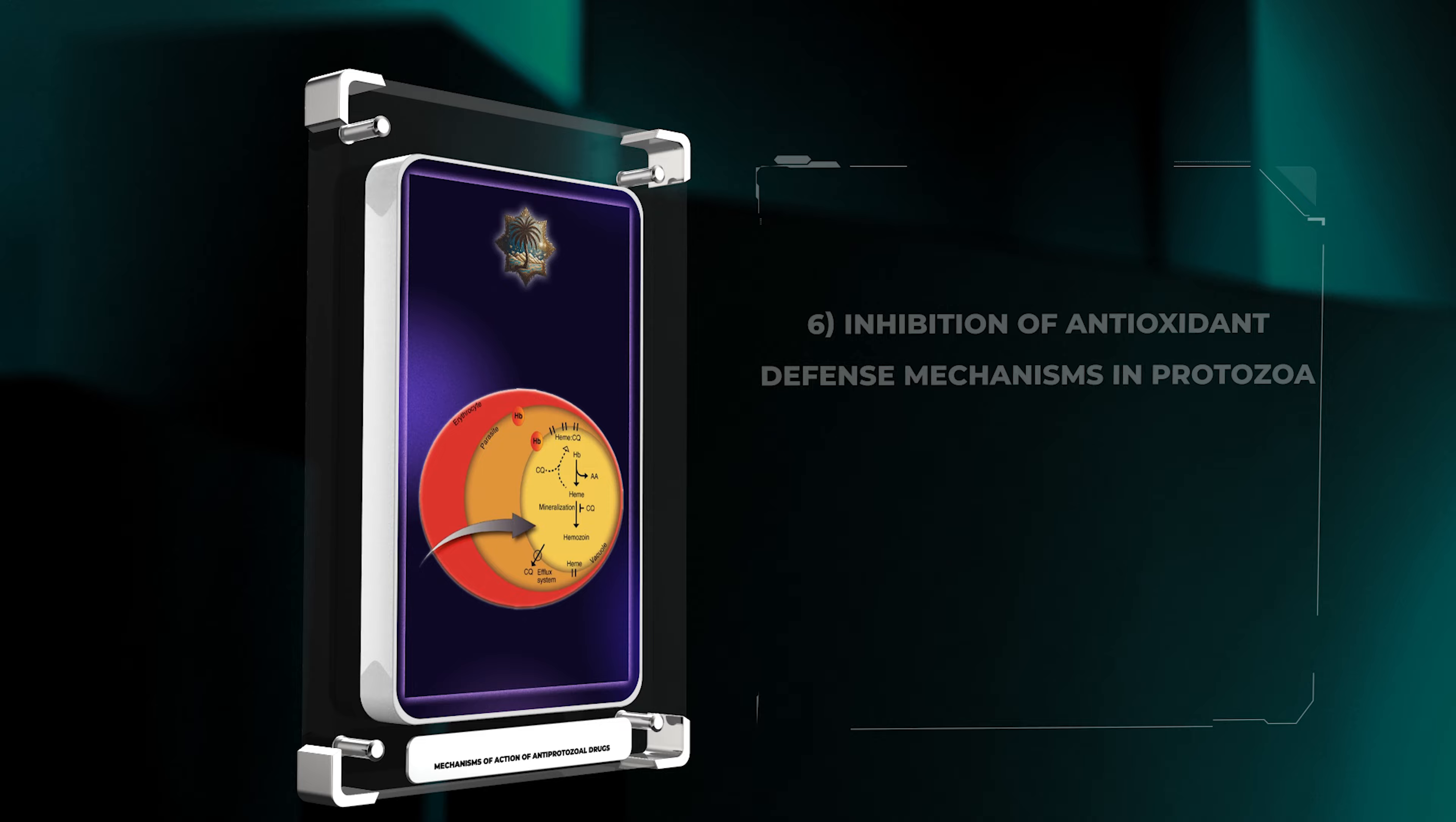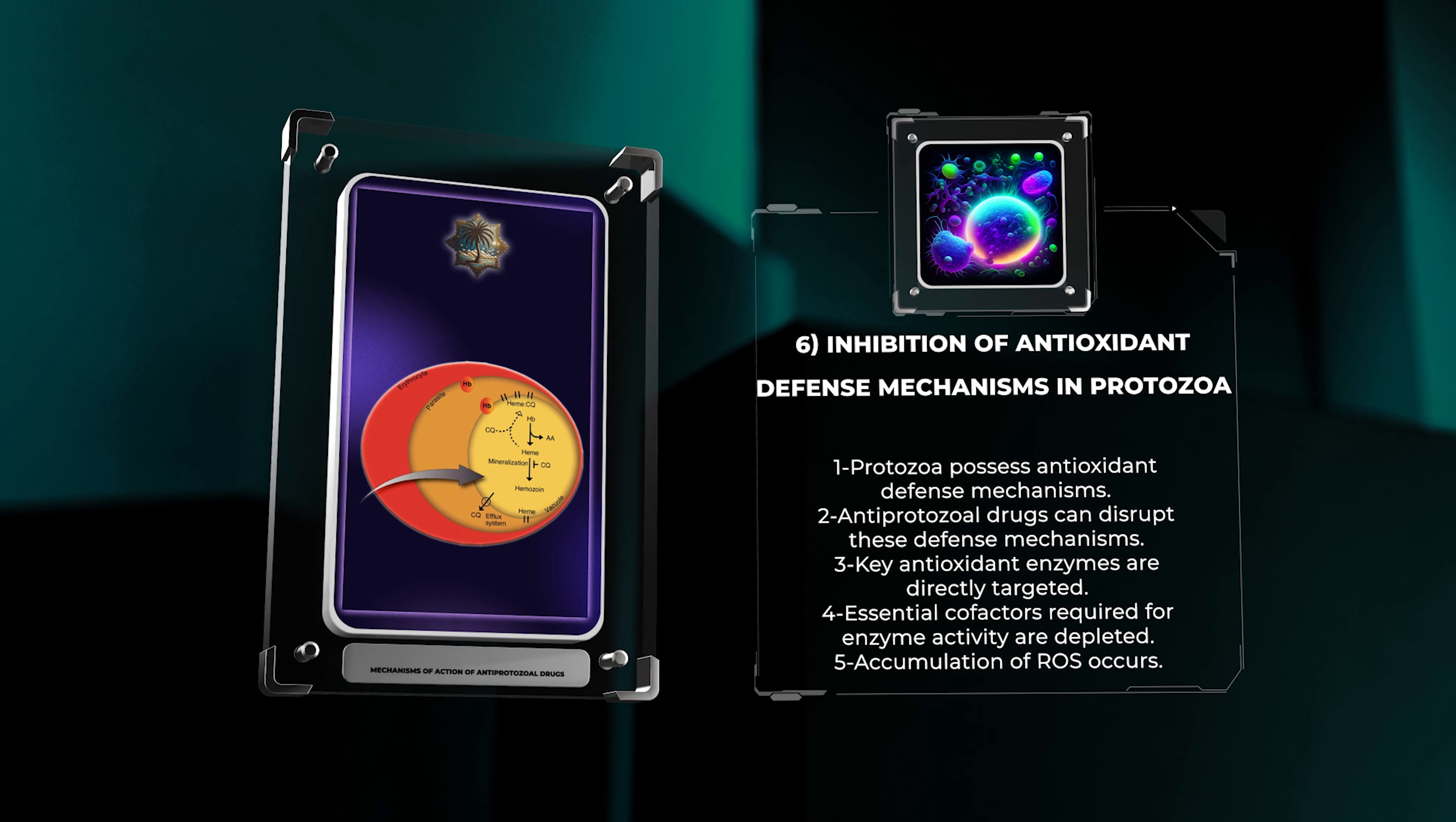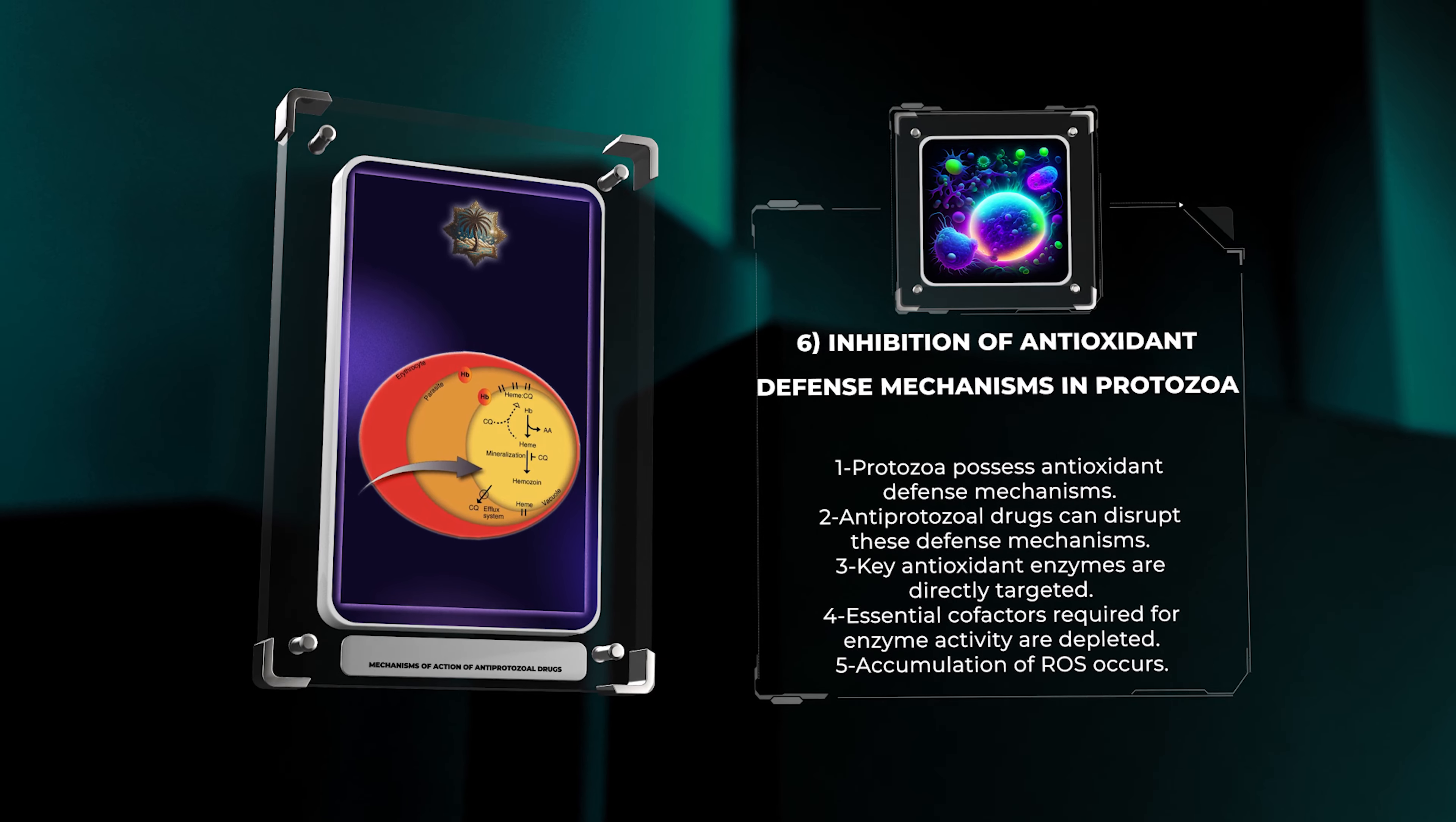Protozoa possess antioxidant defense mechanisms to counteract the deleterious effects of ROS and maintain redox balance. Antiprotozoal drugs can disrupt these defense mechanisms by directly targeting key antioxidant enzymes or depleting essential cofactors required for their activity. Consequently, this inhibition of antioxidant defense systems results in the accumulation of ROS and subsequent cellular damage, contributing to the elimination of the parasites.